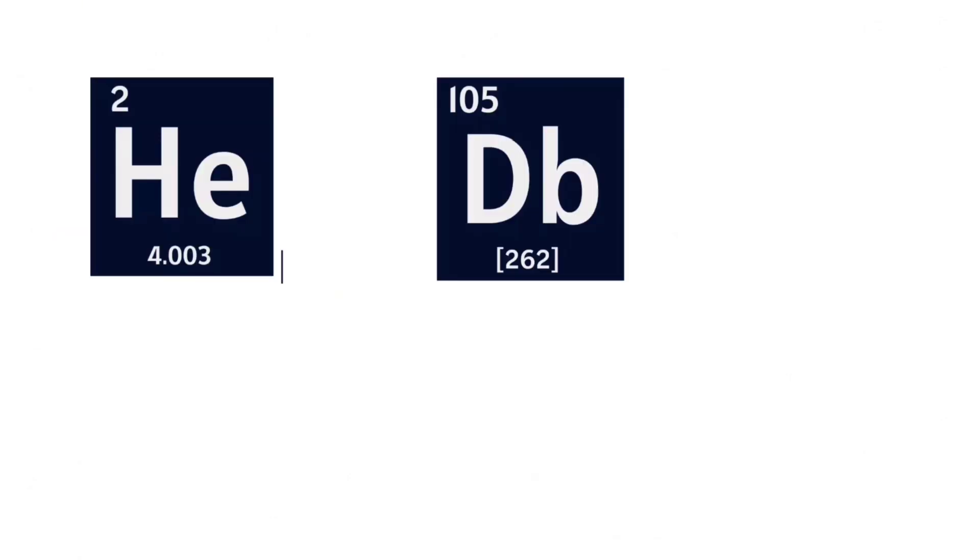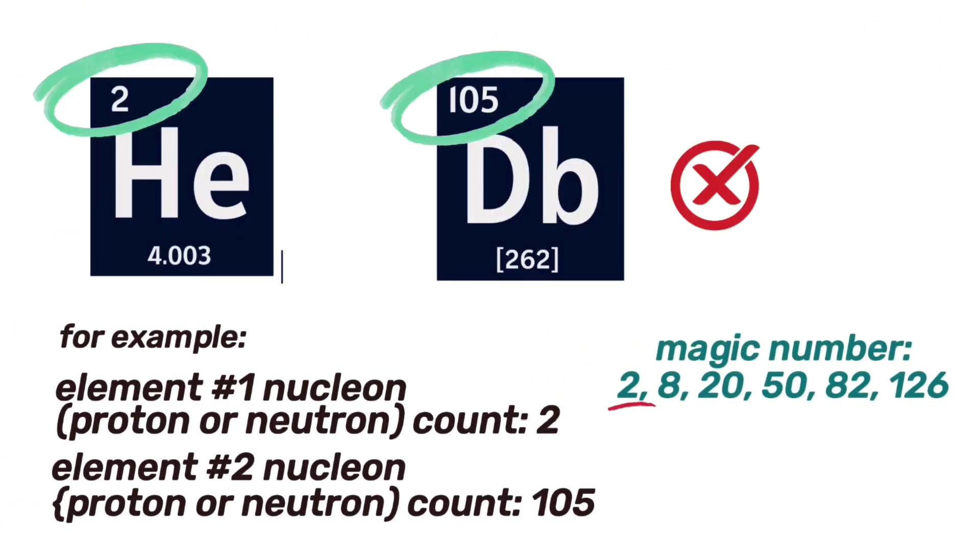2, 8, 20, 28, 50, 82, and 126. If any element has these numbers of nucleons, then that nuclei is said to be a magic nuclei.